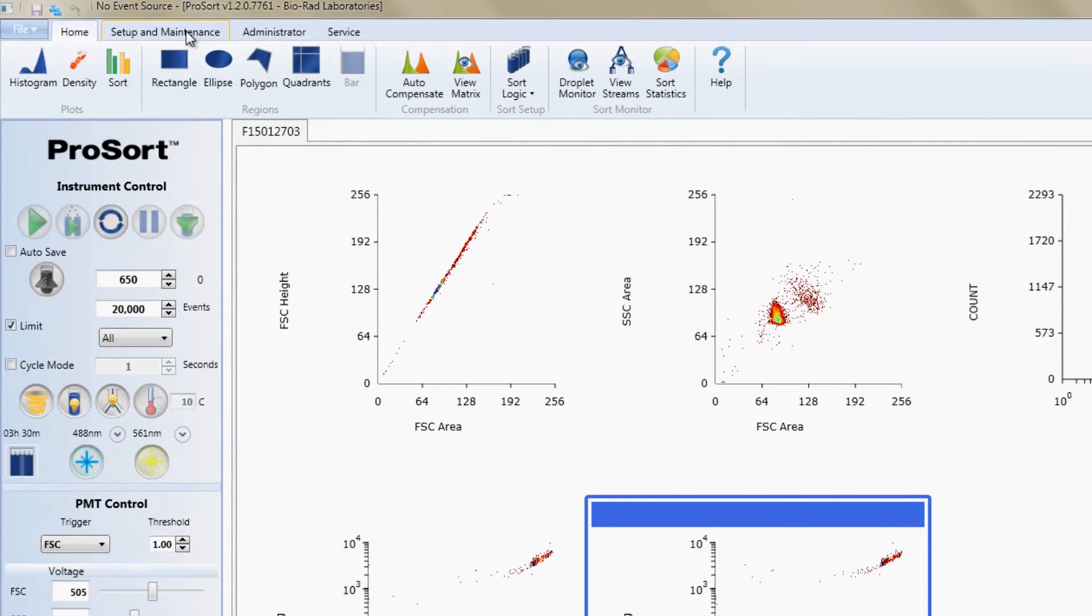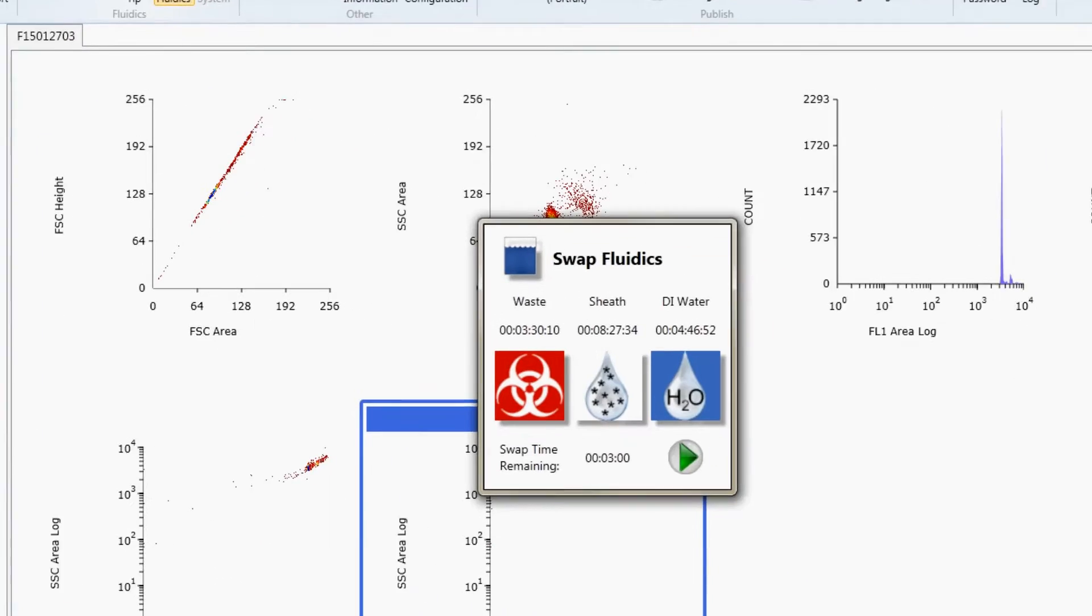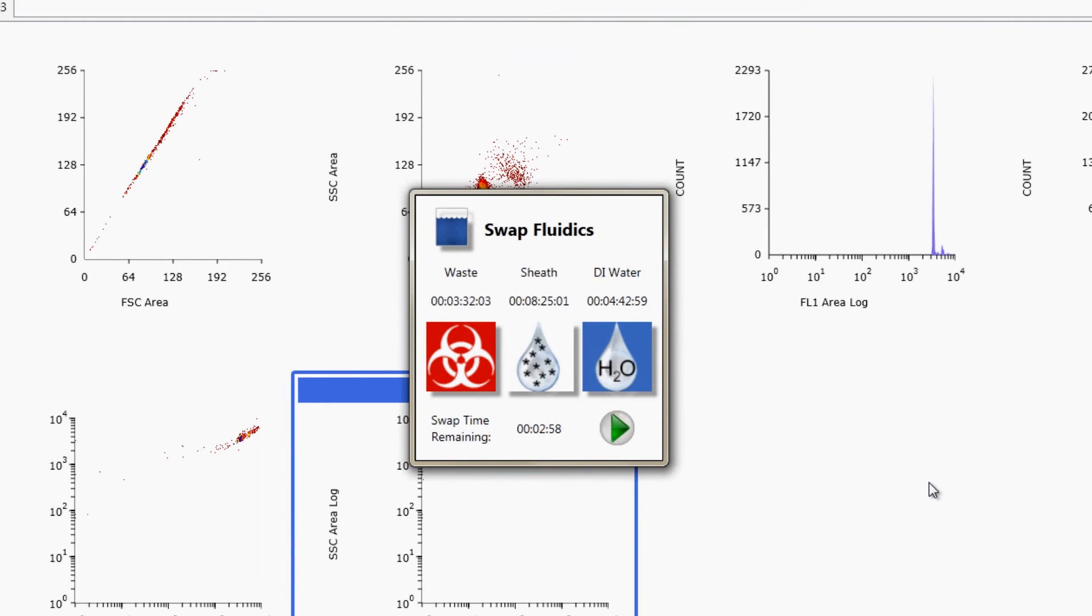Next, go to the Setup and Maintenance tab in the ProSort software and click on the Swap Fluidics button. This will automatically start the 3 minute countdown timer for the fluidics swap.